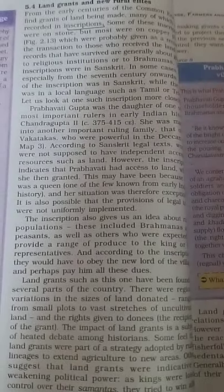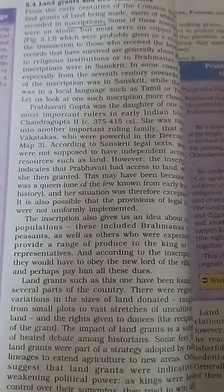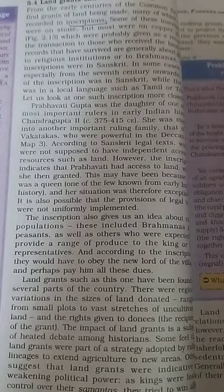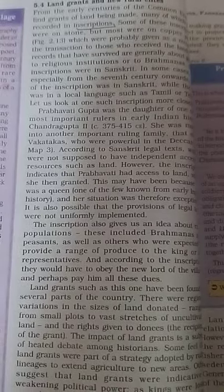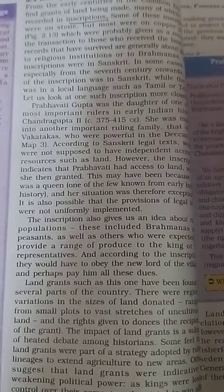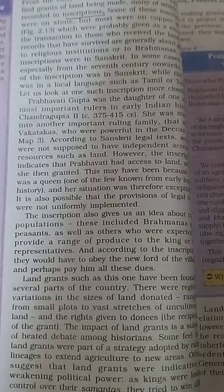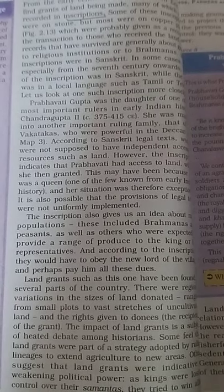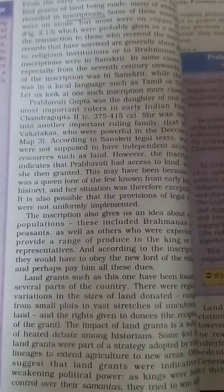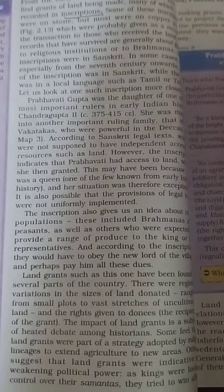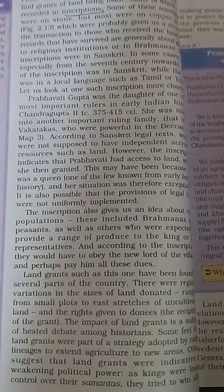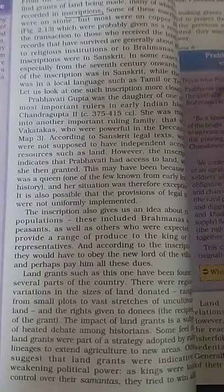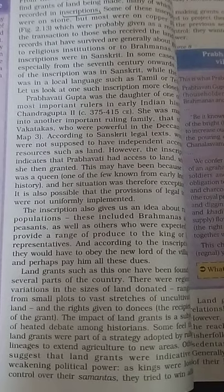Why were grants of land made, and to whom? Earlier, grants were for Brahmins and religious institutions, but later land was also given to Samantas. Grants varied in size from small plots to vast tracts of uncultivable land. Some historians felt that land grants were given by rulers to extend cultivation to new areas. Others felt that the king, by losing control over Samantas through land grants, was trying to win allies and maintain the illusion of being powerful.